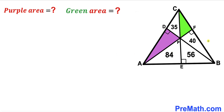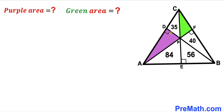Welcome to pre-math. In this video we have a big triangle ABC that consists of a bunch of triangles, including a purple and green triangle. The area of one triangle is 35 square units, another is 40 square units, another is 56, and finally one is 84 square units. All these angles are 90 degrees. Our task is to calculate the area of the purple triangle and the area of the green triangle.